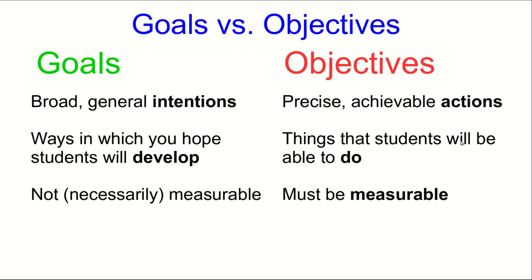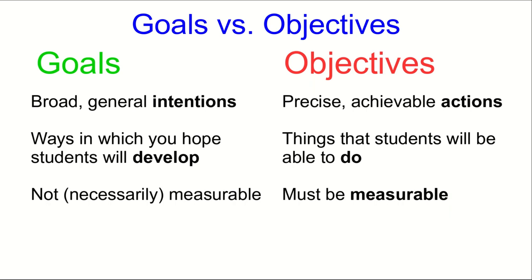Some of you, particularly the humanities folks, might be squirming a bit at the use of the word measurable. I want to assure you I don't by measurable mean quantifiable. Perhaps assessable or maybe observable would be better words, but measurable is the word that's generally used. So when you are say marking an essay, you are probably very skilled at assessing whether a student has made coherent arguments and whether their use of language is good — that's measurable for our purposes.